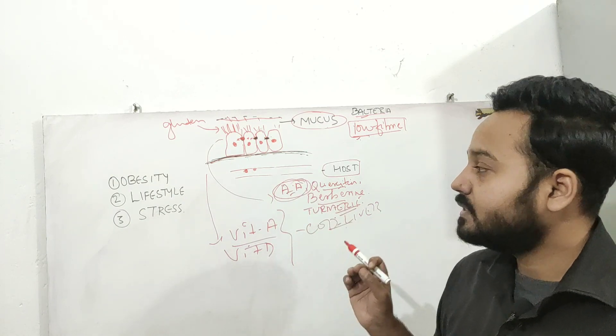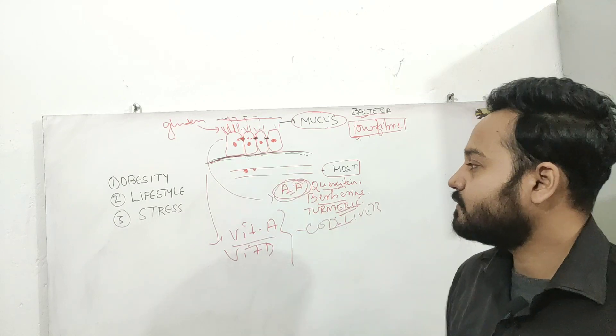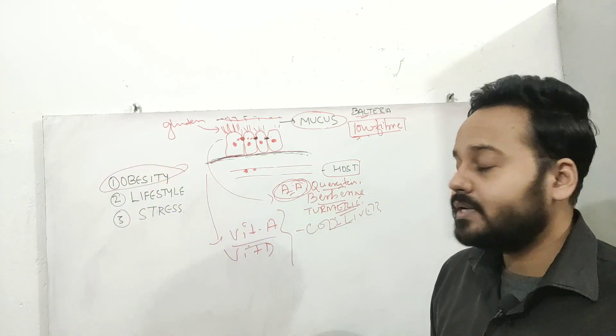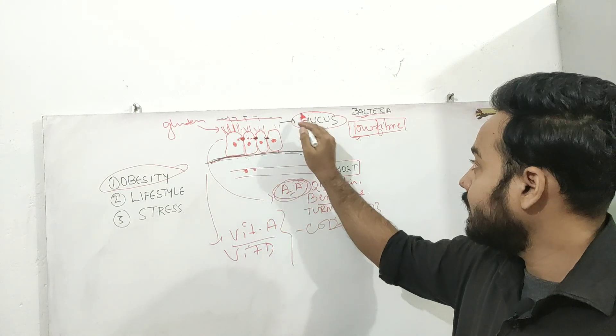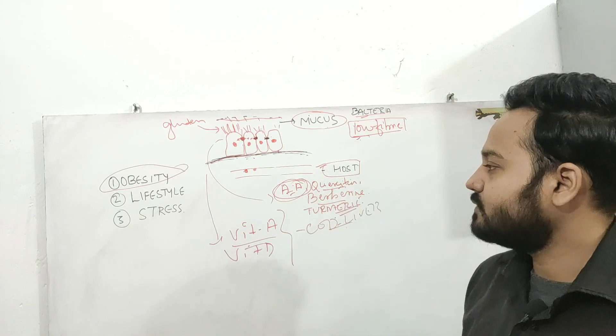Then what causes increased permeability of the intestine? First is obesity. So you have to lose weight in a healthy way to prevent increased intestinal permeability and seepage of toxins into the host defense.